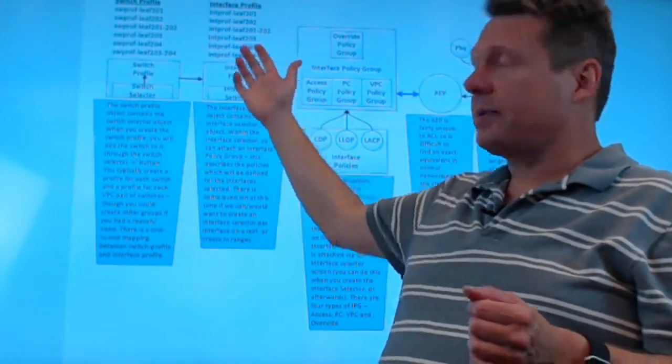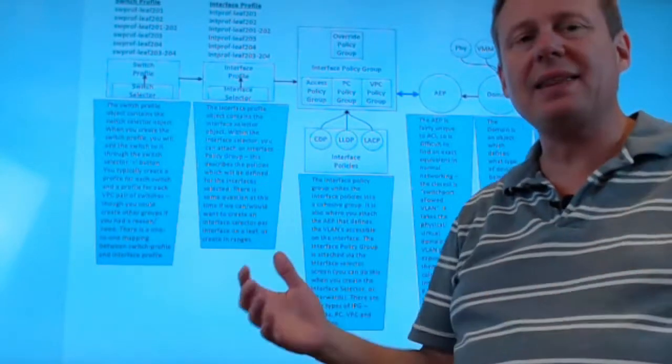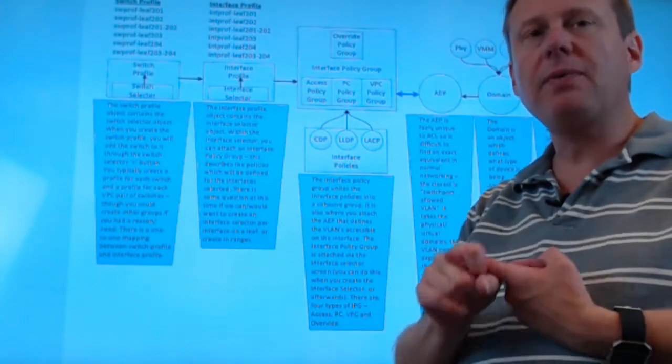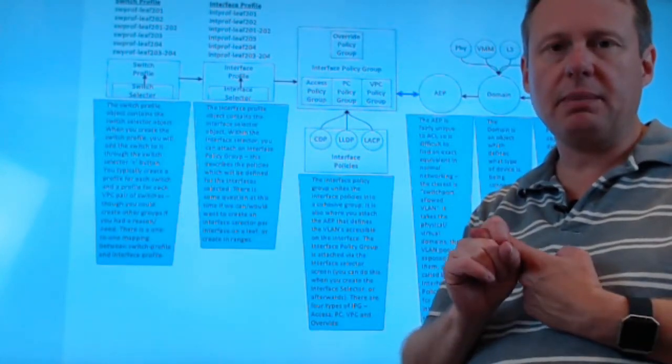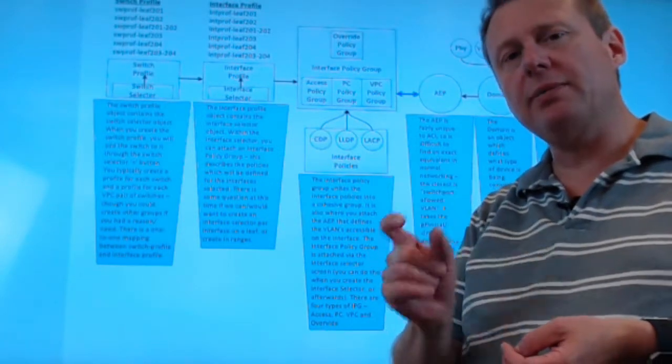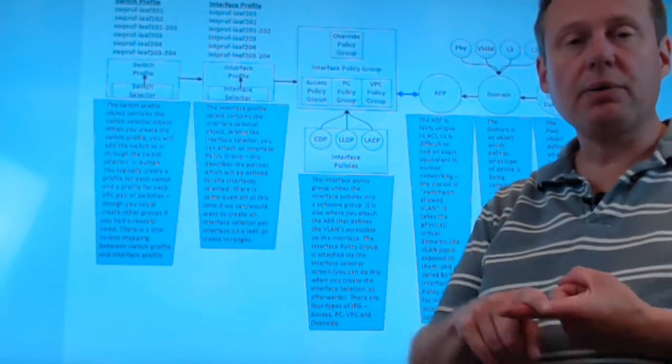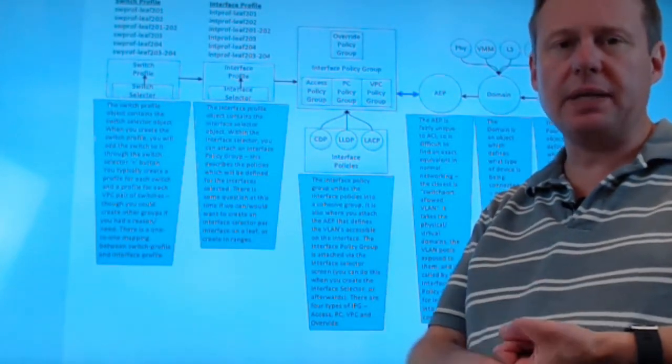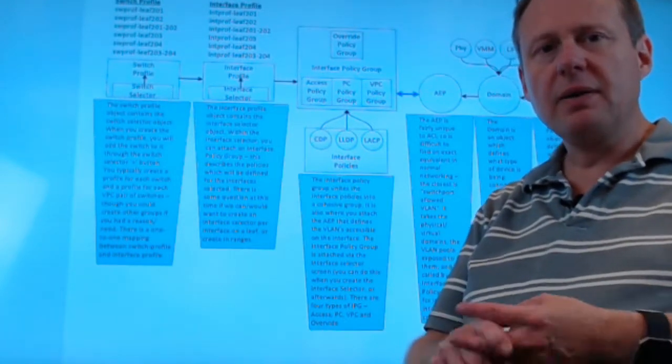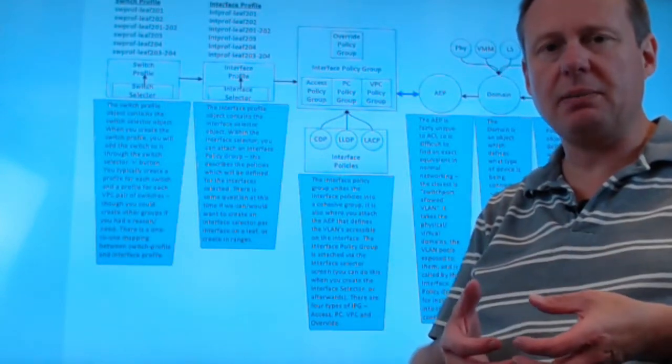So I'm going to create my profiles first. Now the profile is what I think of as a container object. It doesn't do anything unless you put something in the container. The rule of thumb is I have a profile for every leaf in my fabric and then I have a profile for each pair of leaves in a VPC domain. Let me say that again. I have a profile for each individual leaf in my fabric and then I have another profile for each pair of leaves that comprise a VPC domain.